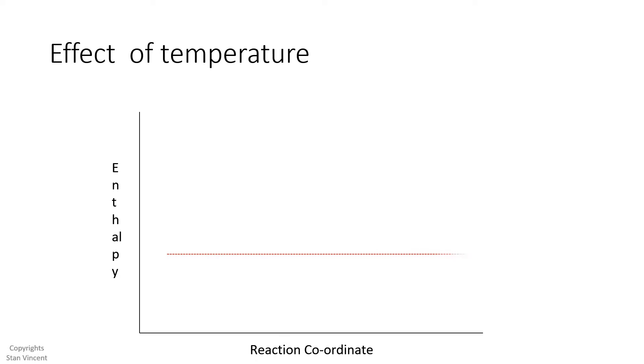Let's look at a graphical representation of the effect of temperature on reactions. On the y-axis, we have the enthalpy change. On the x-axis, you have the reaction coordinate. You have the reactants, you have the product, and the energy values.